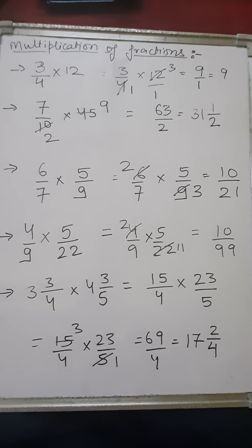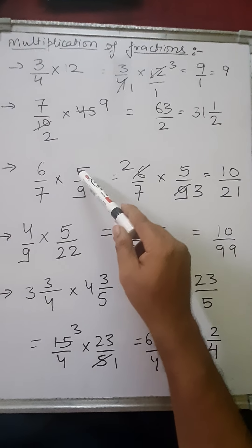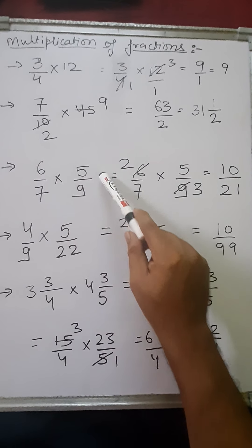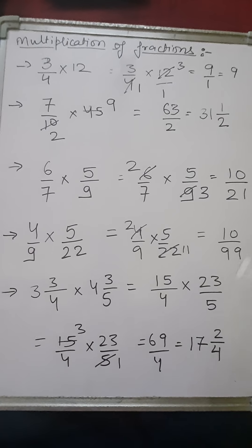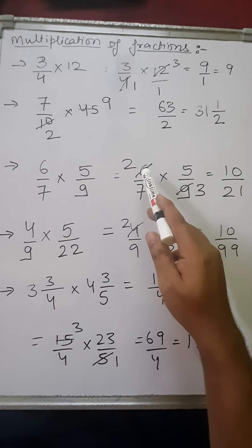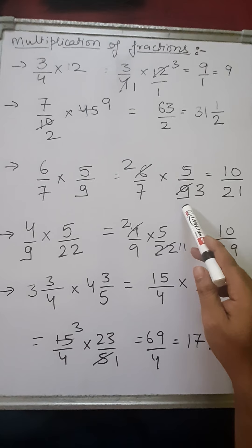In this sum, the question says multiply 6 by 7 into 5 by 9. Now can you see anything getting cancelled? Yes, 6 and 9 both are getting cancelled by 3.